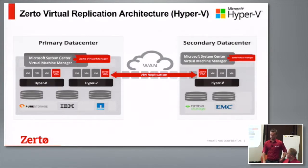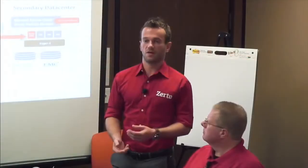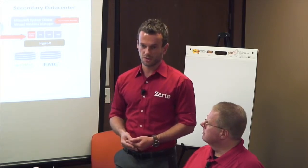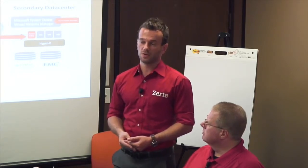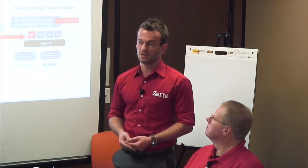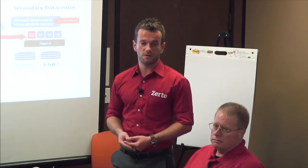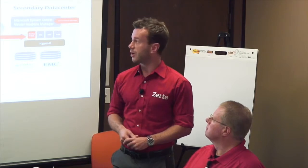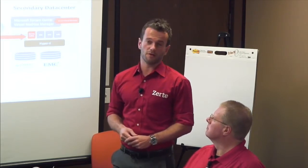Once you've done that, just as in VMware, you create a virtual protection group, which is our logical mapping of which virtual machines you want to replicate and protect. You specify the SLAs, the target site mappings, click go, and all the same functionality applies: continuous replication of just the changes, giving you an RPO of seconds, no snapshots. The journal-based recovery is exactly the same in Hyper-V, so you can recover to increments every few seconds up to five days in the past.